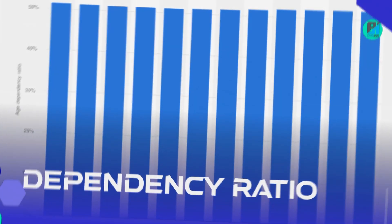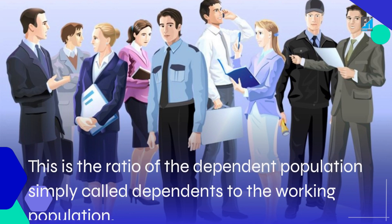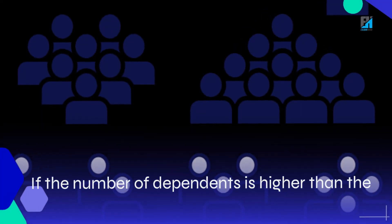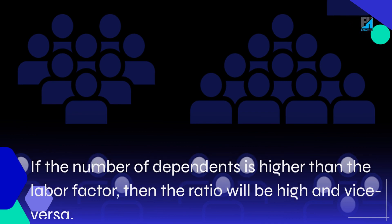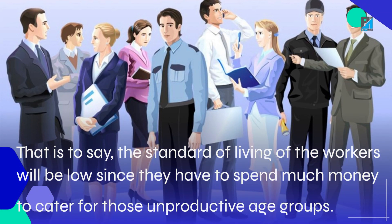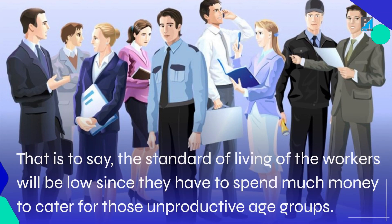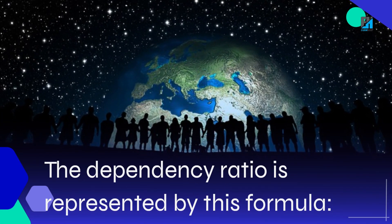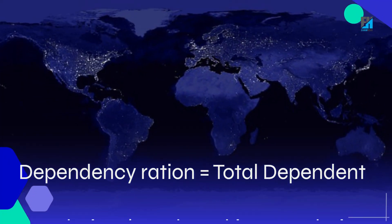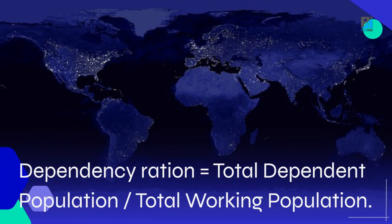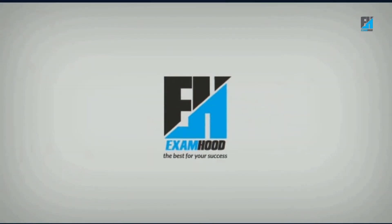Dependency ratio is the ratio of the dependent population to the working population. If the number of dependents is higher than the labor force, then the ratio will be high and vice versa. This means the standard of living of the workers will be low since they have to spend much money to cater for unproductive age groups. The dependency ratio formula is: Dependency Ratio = Total Dependent Population / Total Working Population.